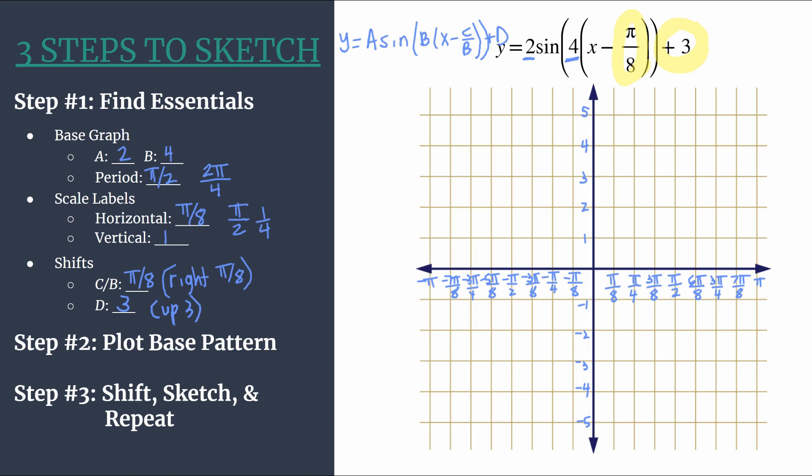So we've done the tough part. We've done all the analysis. Now we're ready to jump into step 2, plot the base pattern. A couple of notes here as we begin. First, make sure you do this lightly or in a different color from what will be your final graph, because this is your base pattern graph. This is if we were graphing in the form y equals a sine bx. So like a basic method graph. Basically, this is going to be the graph of y equals 2 sine 4x. So it's our graph pre-shifts. But once we've done that, we'll just apply the shifts in step 3.